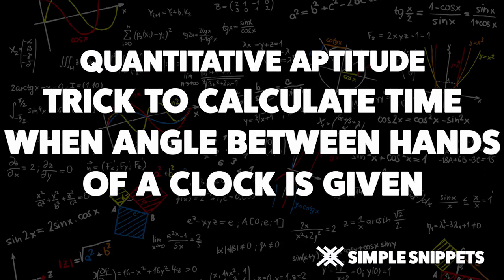Hey, what's up guys, Tanmay here for Simple Snippets and it's aptitude time. In this video tutorial we are going to look at how to calculate the time when the angle between the hour and minute hand of a clock is given. We already solved one type of clock problem where we were given the time and had to calculate the angle — now this is exactly the opposite, but the formula is going to be the same.